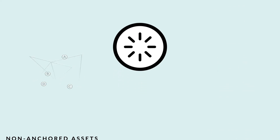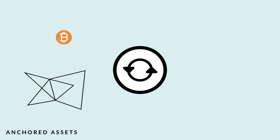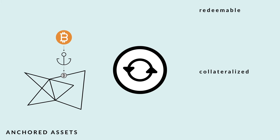Third is anchored assets. If an asset did not originate on the network, it is anchored on the network by an anchoring entity or anchor. These assets are also called collateralized, redeemable, or tethered assets.